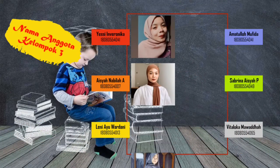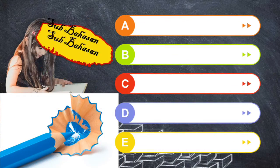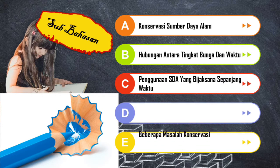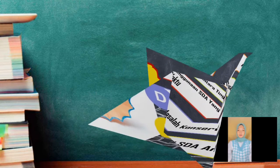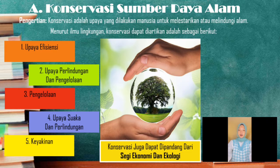We are going to talk about the material one by one, starting from point A: the conservation of natural resources. Conservation of natural resources is the purpose of the human being to live in the world. According to science, conservation of natural resources can be understood as: (1) efficiency efforts, (2) protection efforts, (3) management, (4) sanctuary and protection efforts, (5) belief. Conservation of natural resources can be understood from both an economic and ecological perspective.